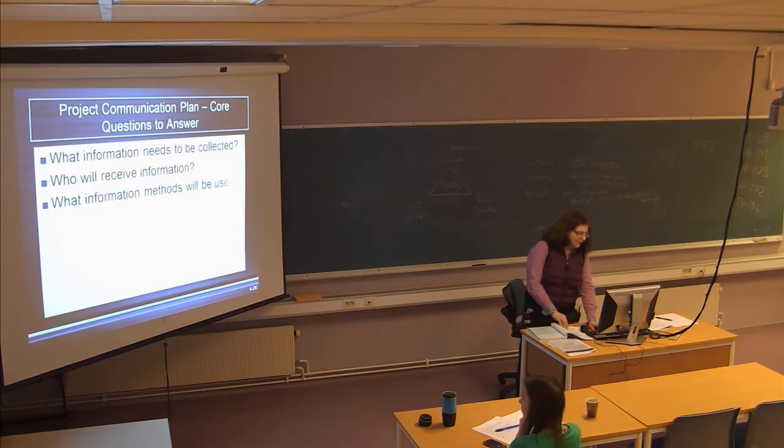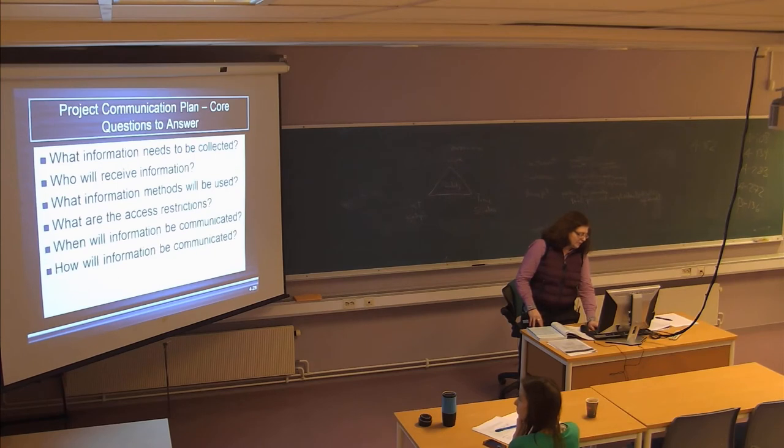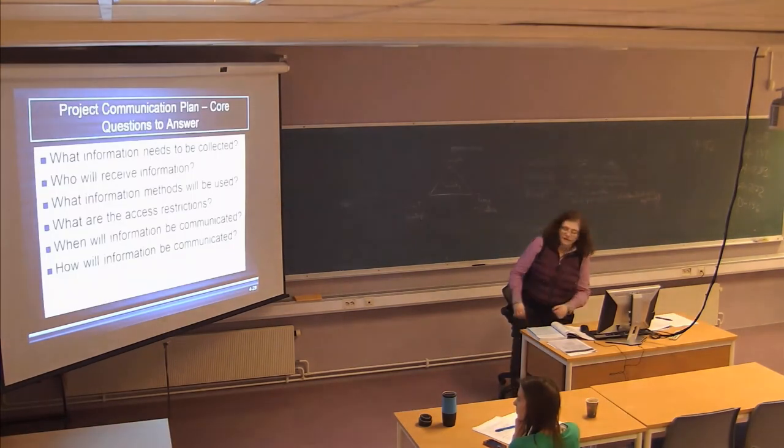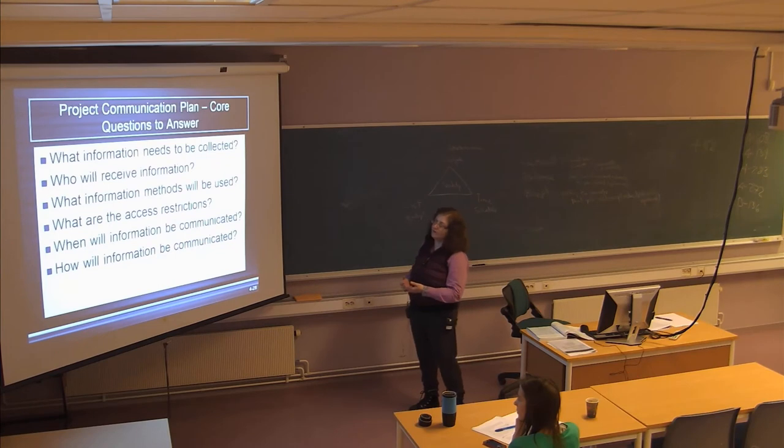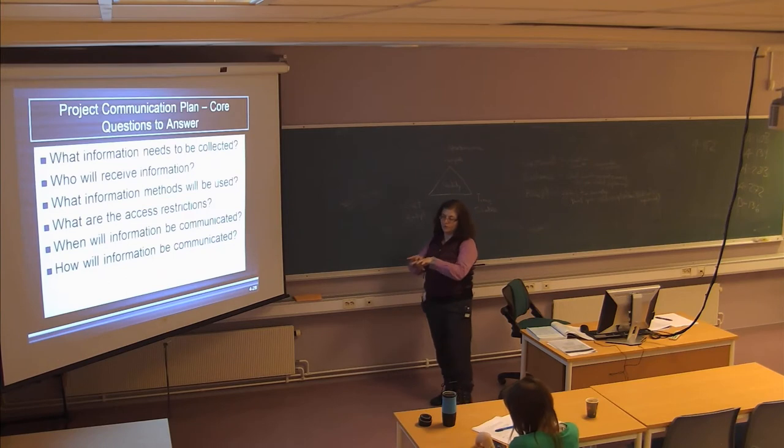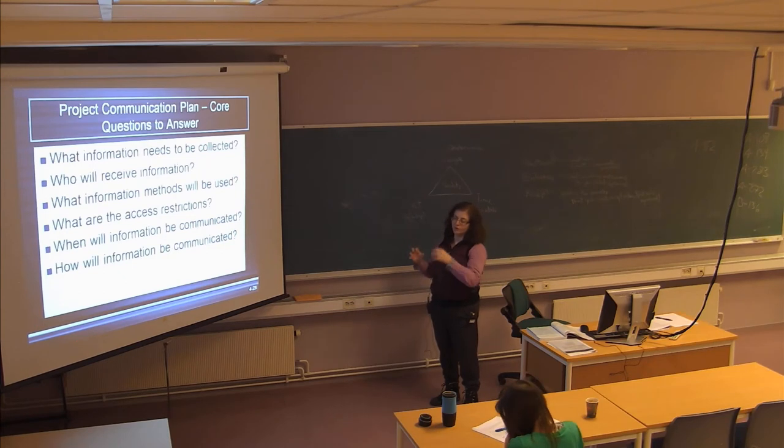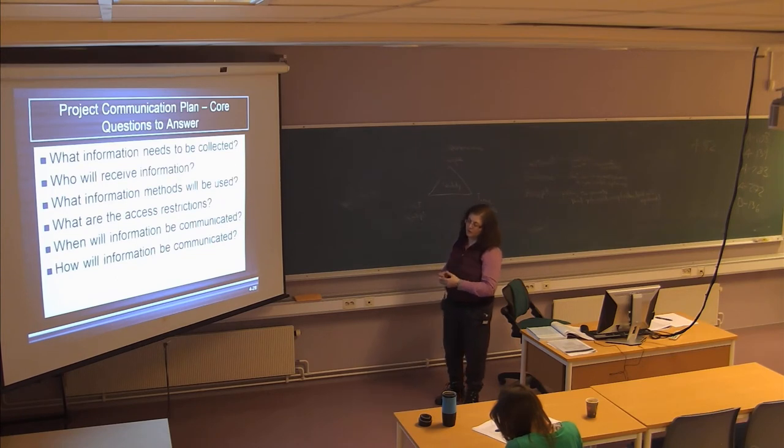So the communication plan has to answer these questions. What is the information needs? Who's going to receive it? What method is going to be used to share it? What are the access restrictions? That means what parts of the information are closed to the group, or what parts are open to others, because there's different stakeholders with different types of access rights. And when is it going to be communicated, and how will it be communicated?